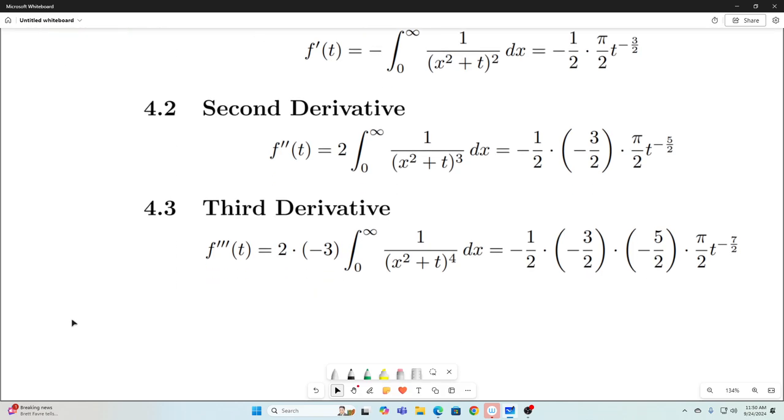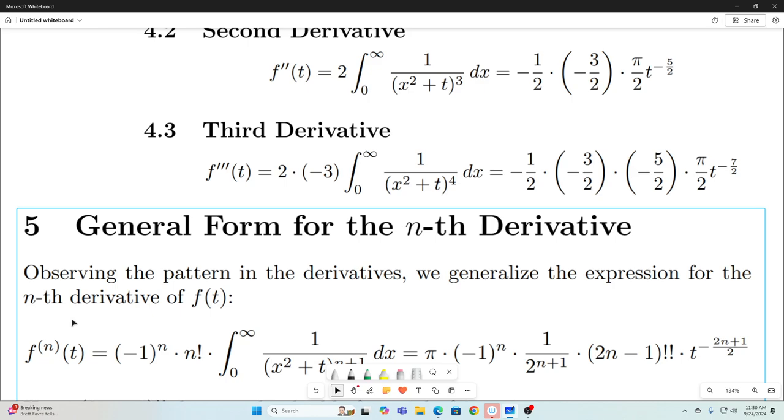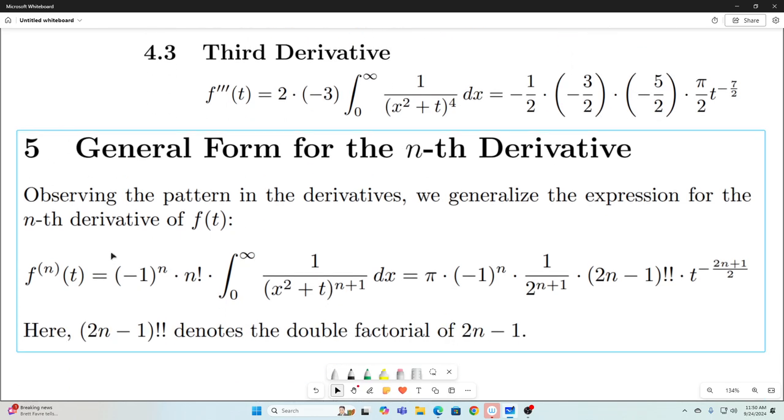We can express this as the nth derivative of our f of t like this. So the pattern emerges and this is what we get. This f to the n of t really means the nth derivative. That's the notation I'm using. And we can express the nth derivative of our integral form and our explicit form of f of t like this. The nth derivative is going to be equal to this in explicit form. And as an integral, the nth derivative will be equal to this. Go ahead and pause the video and wrap your head around that.